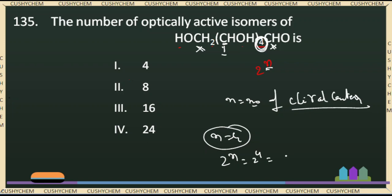The right answer is 2 to the power 4 is equal to 16, so the number of optically active isomers for the given molecule is 16 optically active isomers.